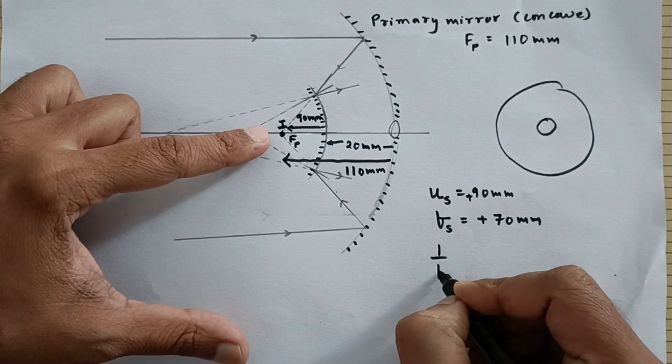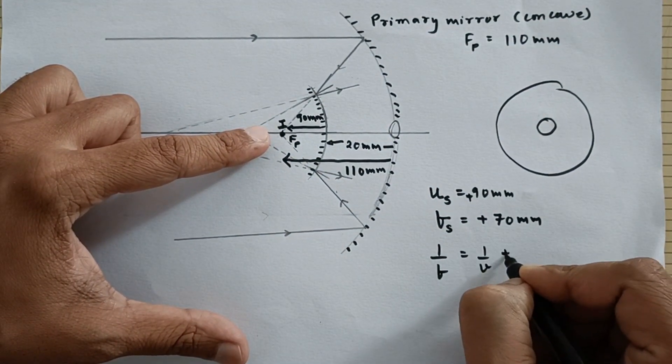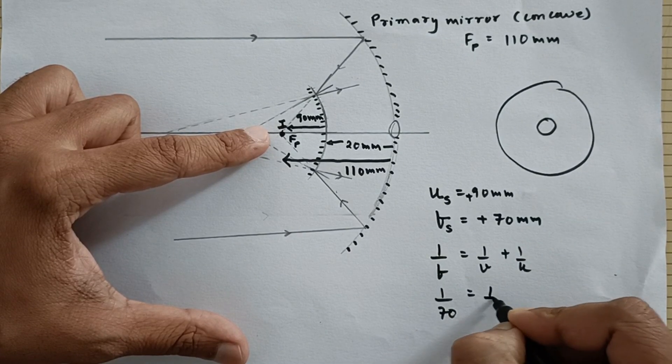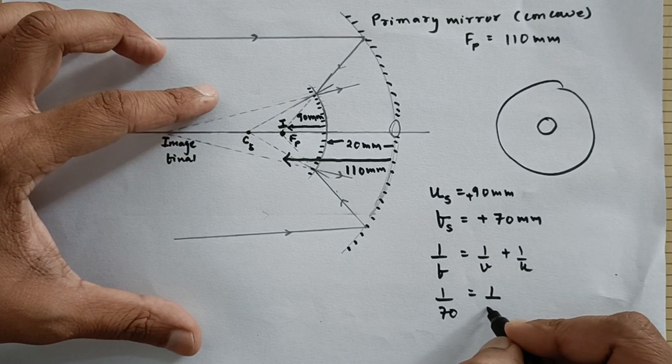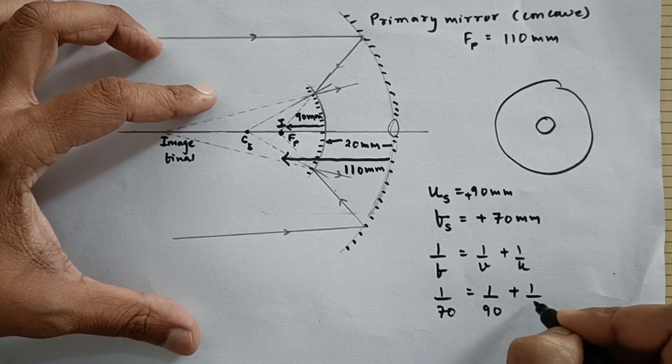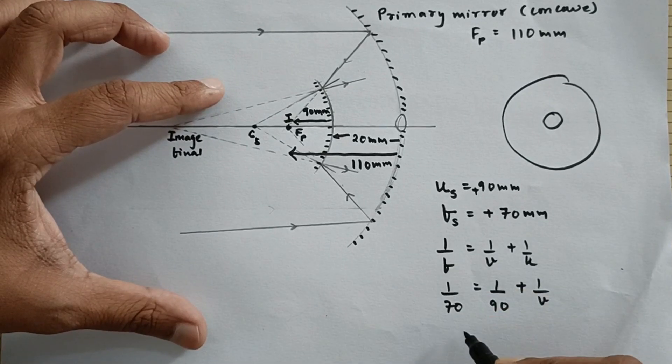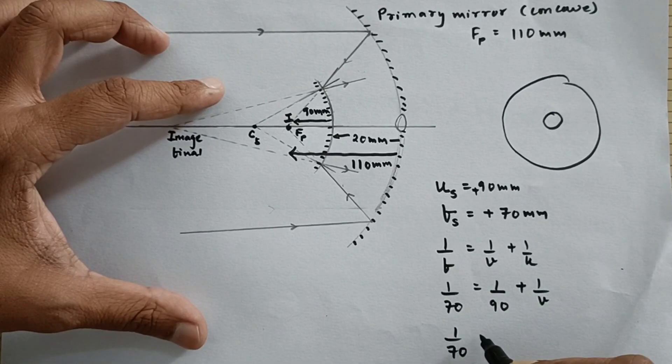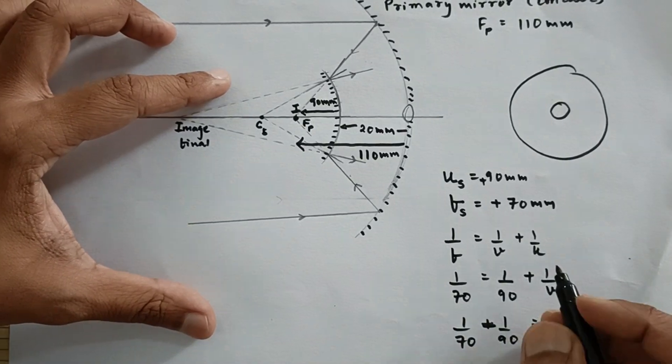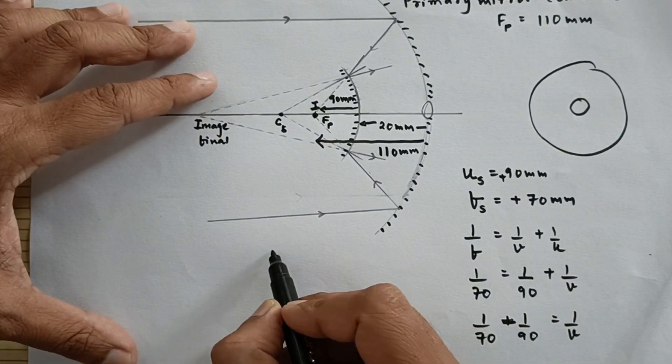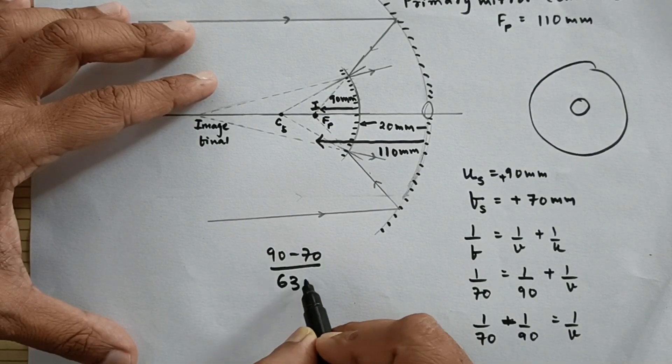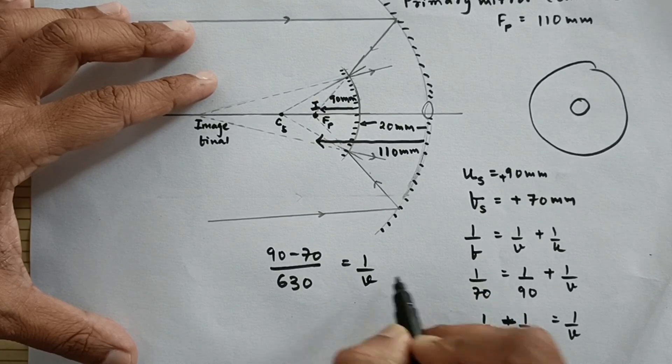So now let us apply 1 upon f is equal to 1 upon v plus 1 upon u. So 1 upon 70 is equal to 1 upon u is 90, so plus 1 upon v. So u is plus 90. So this goes on the other side minus 1 upon 90, that is 1 upon v. Now on solving this further, that is 90 minus 70 upon 7 nines are 63, that is equal to 1 upon v.